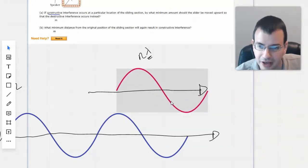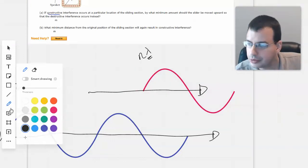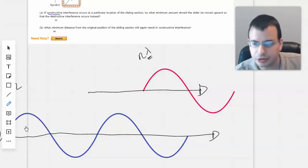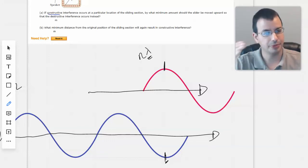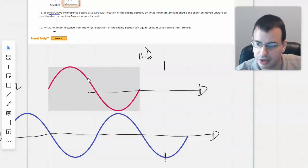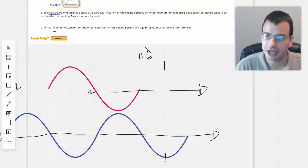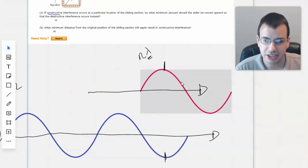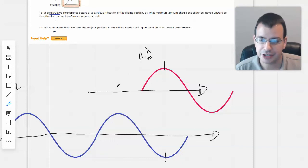So we'd move it kind of like this. So we get the maximum here, minimum here, and when they come together, they cancel each other out. Might be a little bit easier to see the other direction. There we go, have a minimum, maximum, and then they cancel each other out. And so what this is, is a half wavelength difference. So we want to move the top wave this direction, either direction, by a wavelength over two.